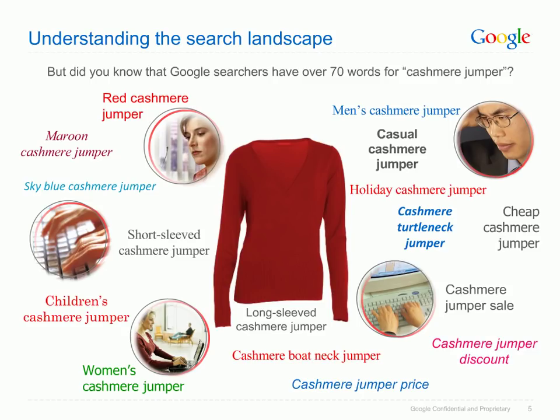Your customers aren't that different from Eskimos — they are using more search term variations than ever before to find the products and services you offer. Let's take a product that's seemingly simple to describe: a cashmere jumper. How many different search terms do you think are used for this? In 2006, people on Google used 47 different terms to look for cashmere jumpers. In 2008 this had increased to 73 terms, and the number is rising.